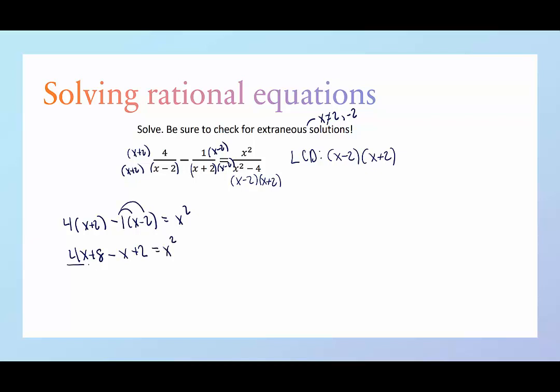I'll combine like terms, 3x, 4x minus 1x is 3x. Positive 8 and positive 2 make positive 10, and all of this equals x squared.